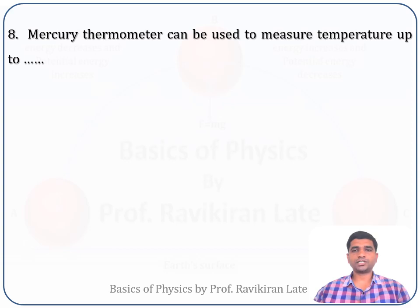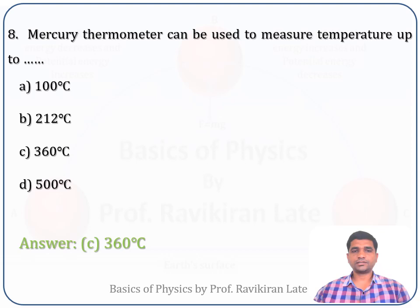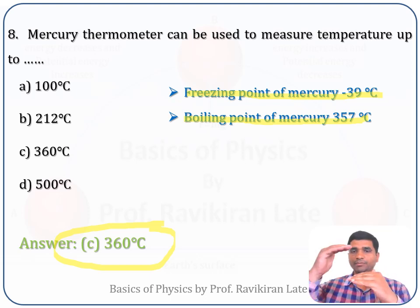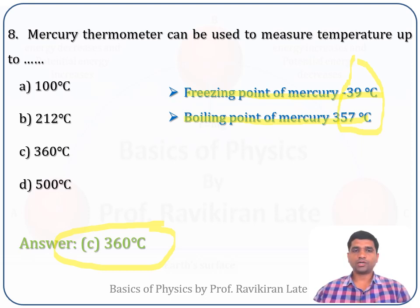Eighth question: mercury thermometer can be used to measure temperature up to which value? Options are 100°C, 212°C, 360°C, or 500°C. The freezing point of mercury is minus 39°C and the boiling point is 357°C. So the mercury thermometer works in the range of minus 39 to approximately 360°C. The correct answer is option C, 360 degrees Celsius.